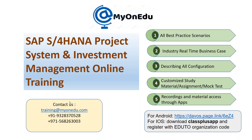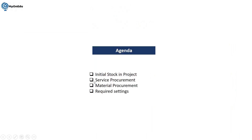Today's session is a continuation of previous topics with a few additions. I'm going to explain the initial stock project — how you can maintain existing stock for a project and how you can issue it. Then we'll see the process steps of service procurement, material procurement, and the required settings for all these arrangements.